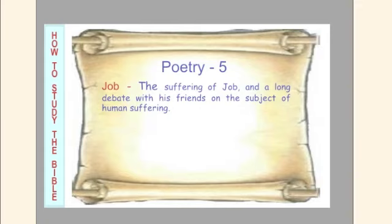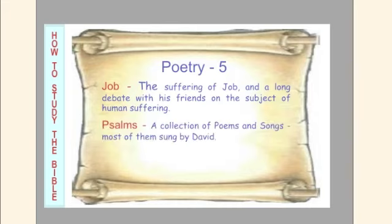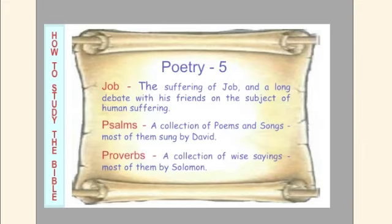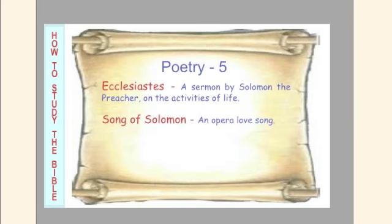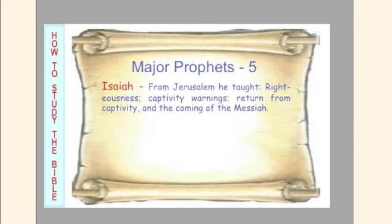Poetry — five books. Job covers the suffering of Job and a long debate with his friends on the subject of human suffering. Psalms is a collection of poems and songs, most of them sung by David. Proverbs is a collection of wise sayings, most of them by Solomon. Ecclesiastes is a sermon by Solomon the preacher on the activities of life. Song of Solomon is an opera love song.